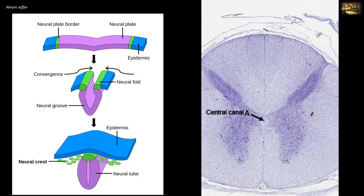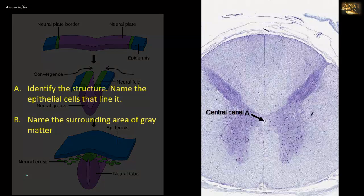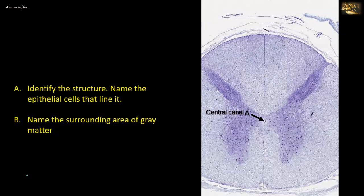It is lined by ependymal cells — the thin epithelial lining of the ventricular system of the brain and the central canal of the spinal cord. Ependymia is one of the four types of neuroglia in the central nervous system: astrocytes, oligodendrocytes, microglia, and ependymia. The ependymia is involved in the production of cerebrospinal fluid.